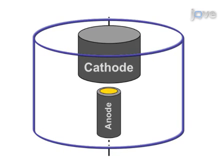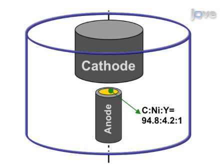The anode is prepared and is fabricated with a specific ratio of carbon, nickel, and yttrium of 94.8 to 4.2 to 1, and the cathode is a pure carbon rod.